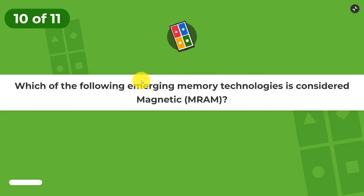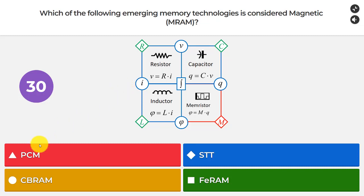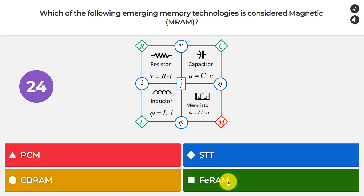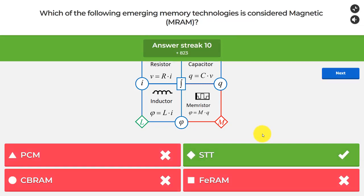Question number 10: which of the following emerging memory technologies is considered magnetic RAM? PCM, STT, CBRAM, or FeRAM? The answer is STT, or STT-MRAM (spin-transfer torque magnetic RAM).